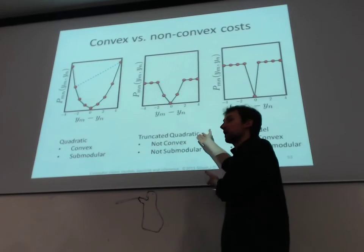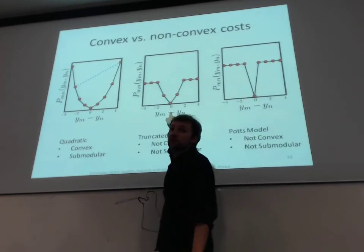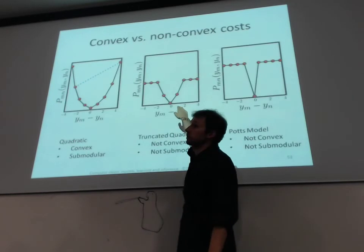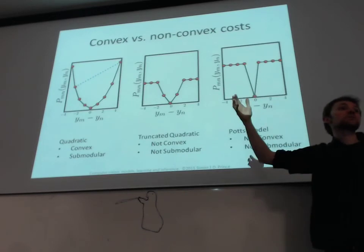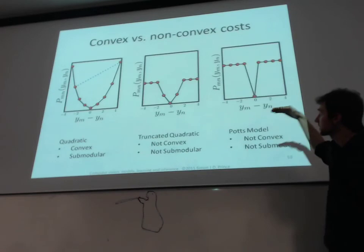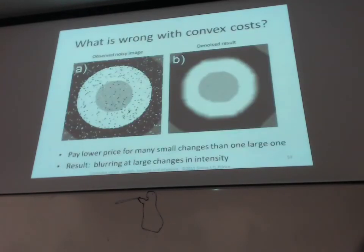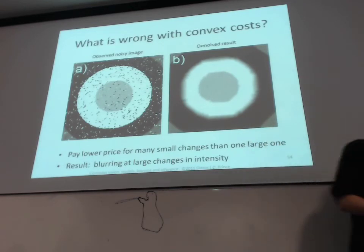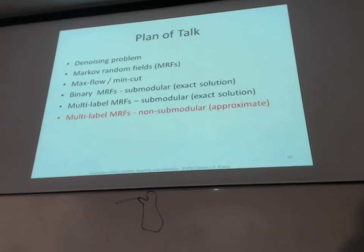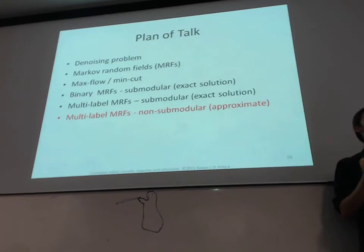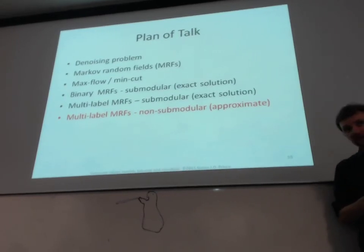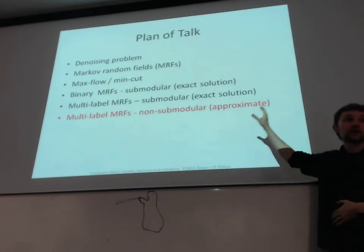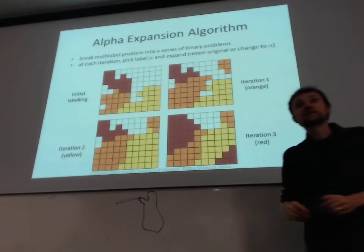Alpha expansion is used when we have a non-convex, non-submodular cost function. For disparity, two neighboring pixels with the same disparity get zero cost, intermediate disparity difference gets a bigger cost, but a really large disparity difference gets a flat cost — they've already been punished enough. If we use only a quadratic function we get smooth boundaries, but what if we want sharp boundaries? We can deal with that case using alpha expansion, but it no longer guarantees an exact solution. It gives an approximate solution, guaranteed to be within a factor of two of the absolute optimum.